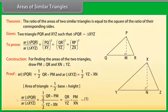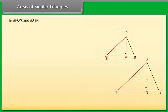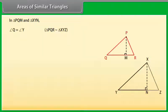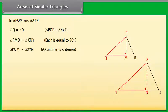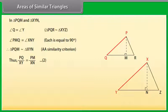In triangle PMQ and triangle XNY: angle PMQ equals angle XNY, each equal to 90 degrees, and angle PQR equals angle XYZ. Therefore triangle PMQ is similar to triangle XNY by AA similarity criterion. Thus, PQ upon XY equals PM upon XN. Mark it as equation 2.